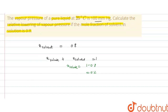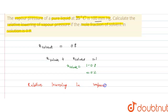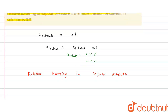Relative lowering in vapor pressure is a colligative property. The vapor pressure of the pure solvent decreases on the addition of solute — meaning the solution vapor pressure is less than that of the pure solvent.